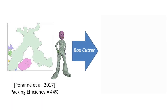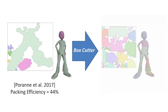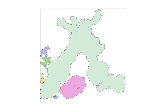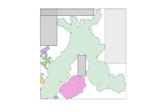We propose Box Cutter, a new method for optimizing packing efficiency suitable for both settings. The main observation behind our method is that inefficiently packed atlases are characterized by the presence of large empty spaces, and specifically axis-aligned empty or void boxes. Cutting the atlas to facilitate removal of such boxes is key to improving packing efficiency.